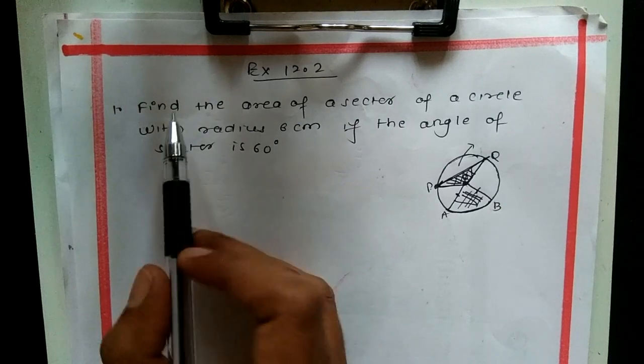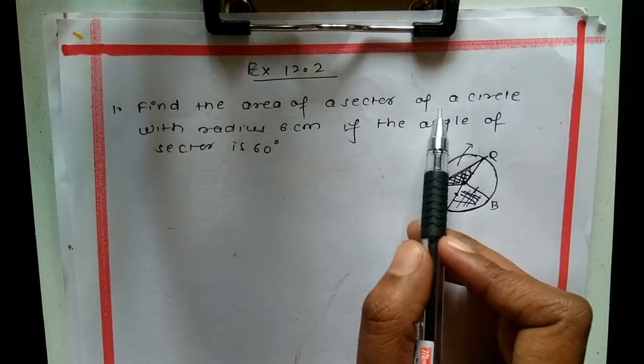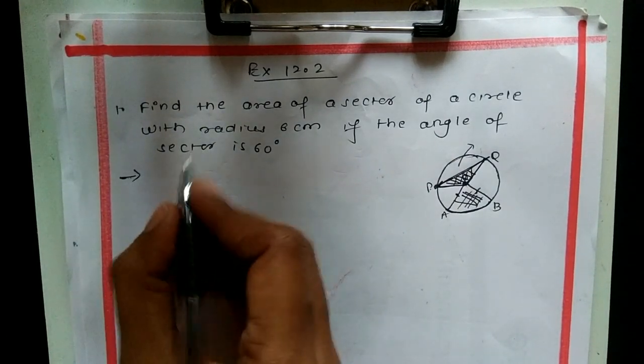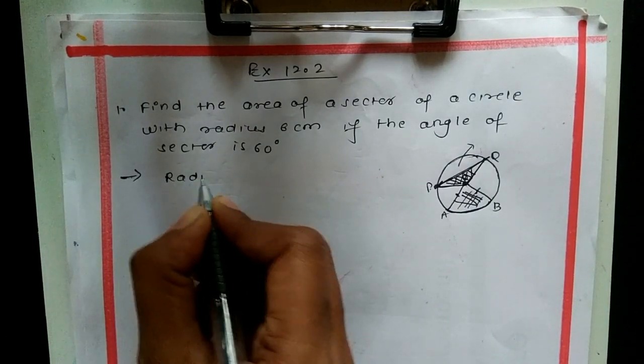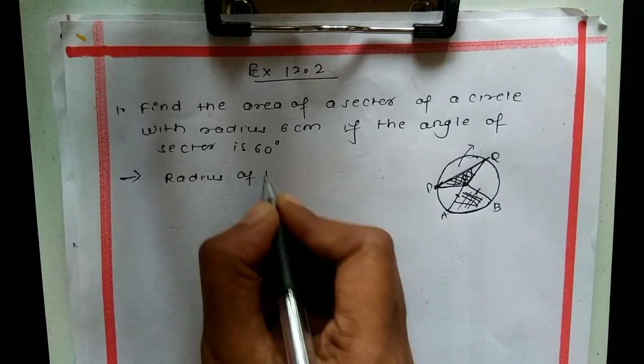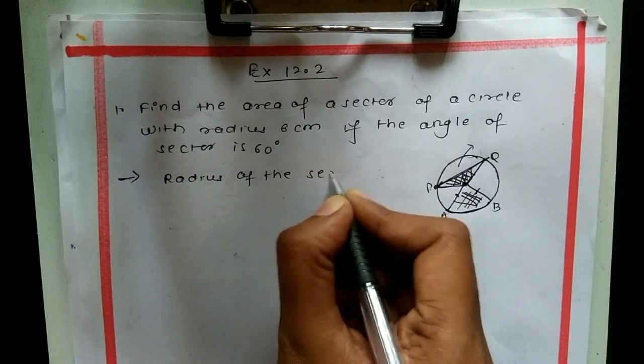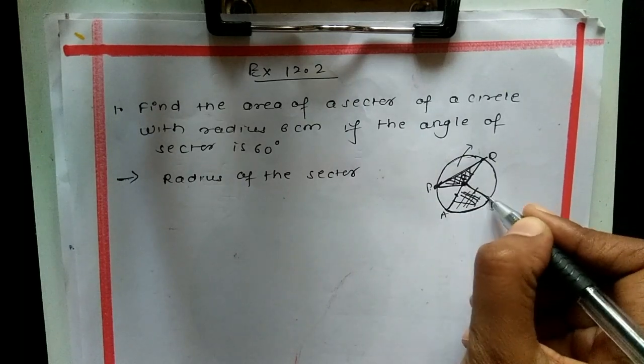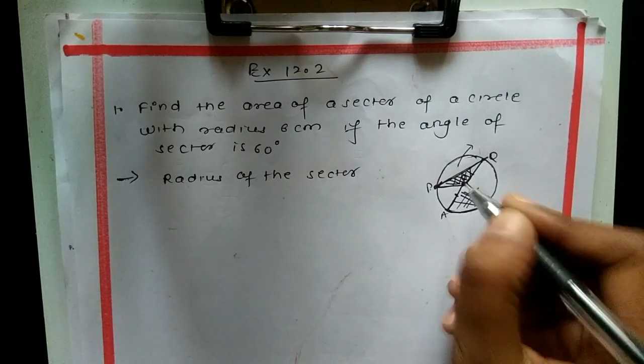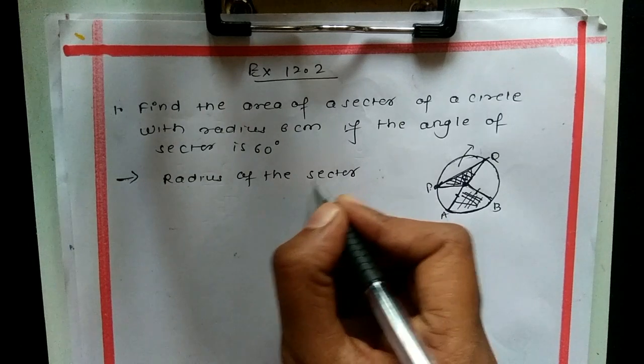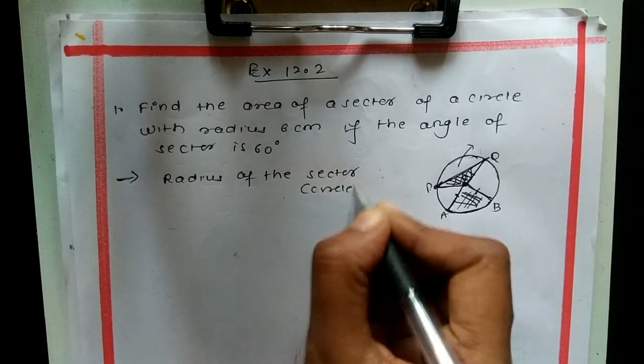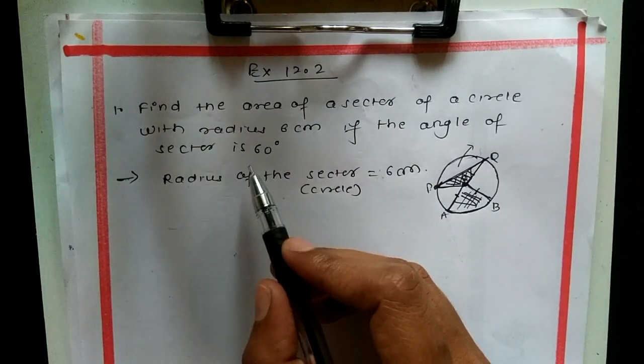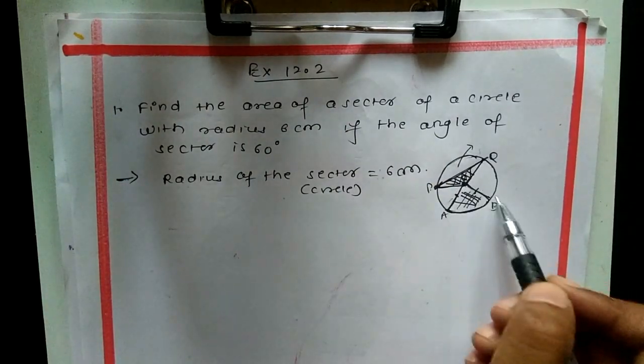In this question, find the area of sector of a circle whose radius is 6 centimeters. First, write down the given information. The radius of the sector and circle is the same - that is 6 centimeters.